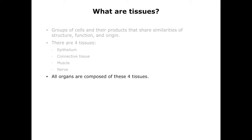As we go through this unit, you will see that all organs in the body are composed of combinations of these four tissues. Although the concept of tissues comes from work that was done mostly in the 1800s, it has stood the test of time and still provides a useful way of understanding normal function and recognizing disease.